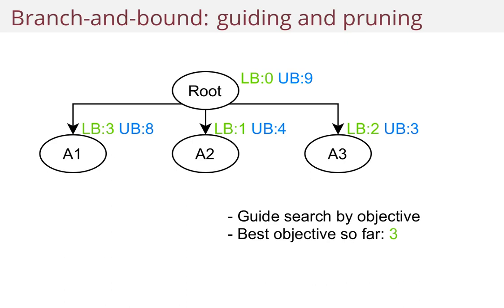Then you branch to create children — you get A1, A2, and A3 — and they all have lower bounds and upper bounds. The best objective is the maximum lower bound that you've seen so far. So here A1 has a lower bound of three, meaning if you expand A1, you can get three or higher. And you guide the search by, for instance, the lower bound.